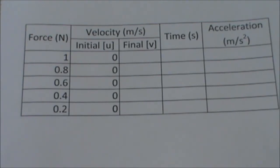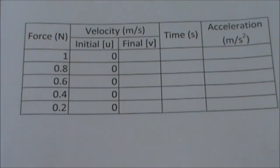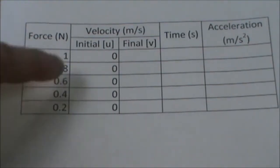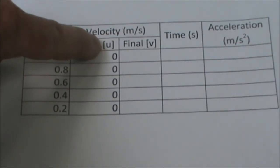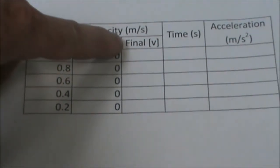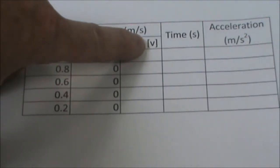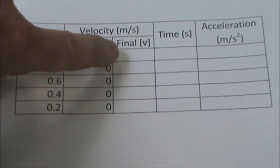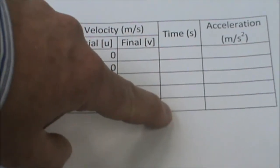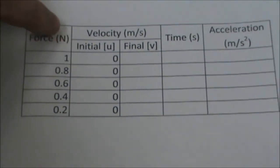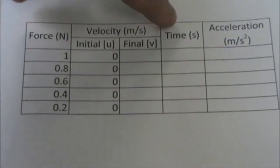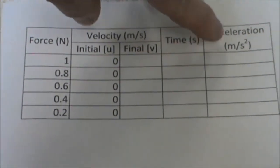As we're using the B SPIV light gates we don't have them hooked up to a computer so we're going to have to manually calculate the acceleration. We're going to have different forces applied to our glider. The starting speed, the initial speed which in the acceleration calculation has the symbol U will always be 0. The final velocity which has the symbol V in the calculation we will record here. The time from the light gate we will write down here. And then we can calculate our acceleration. Force is measured in newtons. Velocity in metres per second. Time in seconds. And acceleration in metres per second squared.